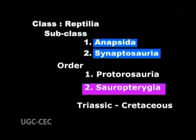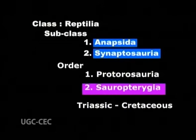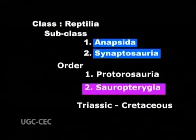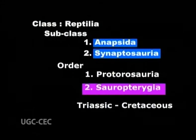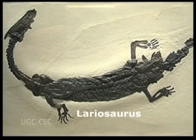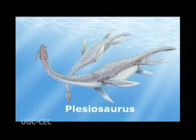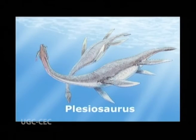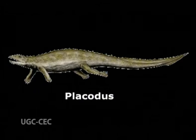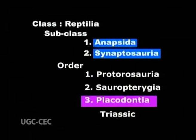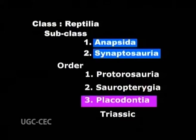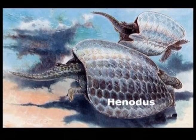Order 2, Sauropterygia, were living during Triassic to Cretaceous. Examples are Lariosaurus, Plesiosaurs, Plesiosaurus, and Placodontus. Order 3, Placodontia, lived in Triassic; the example is Henodus.